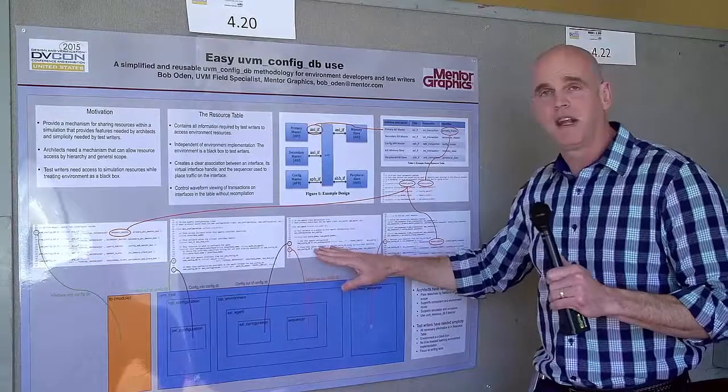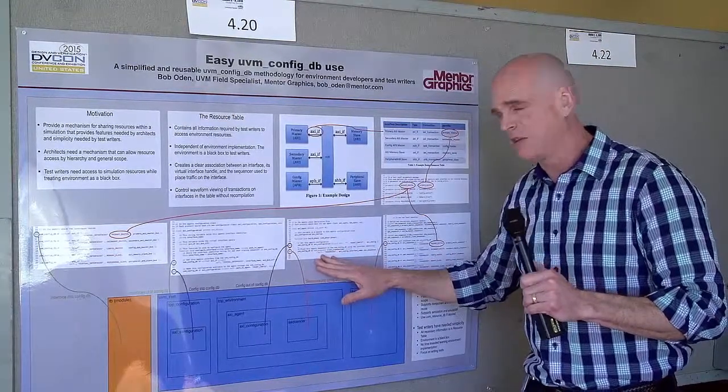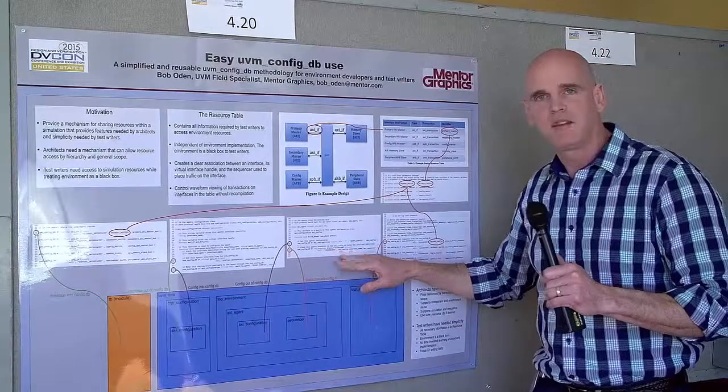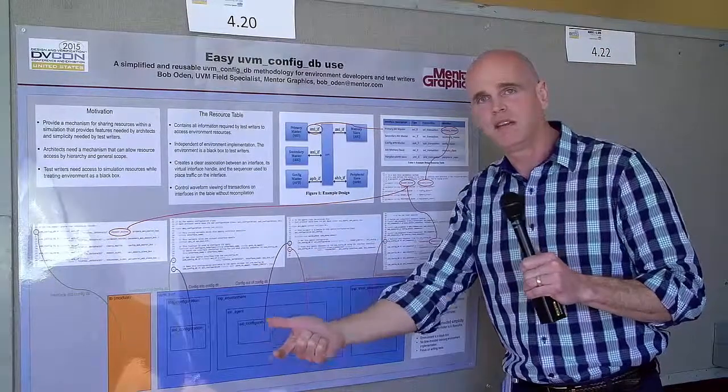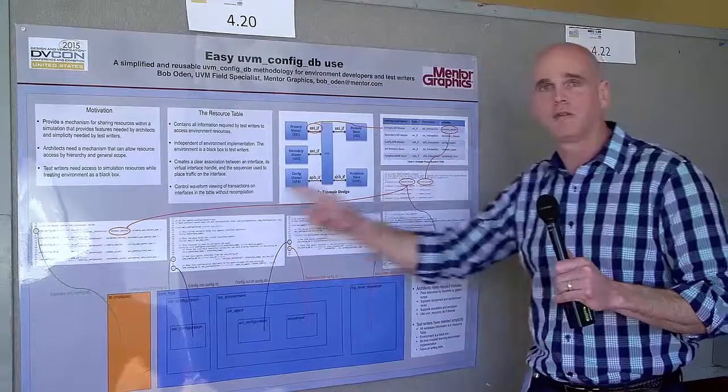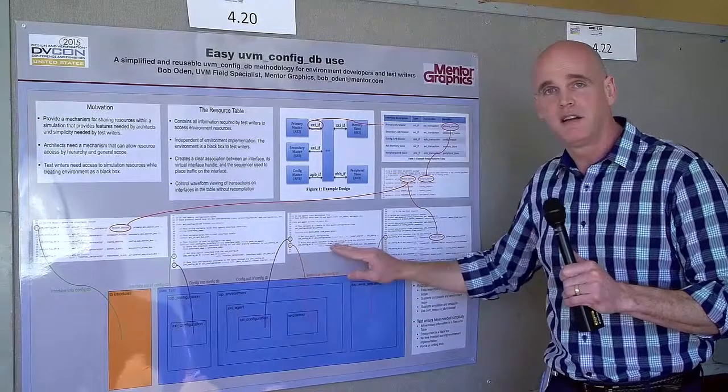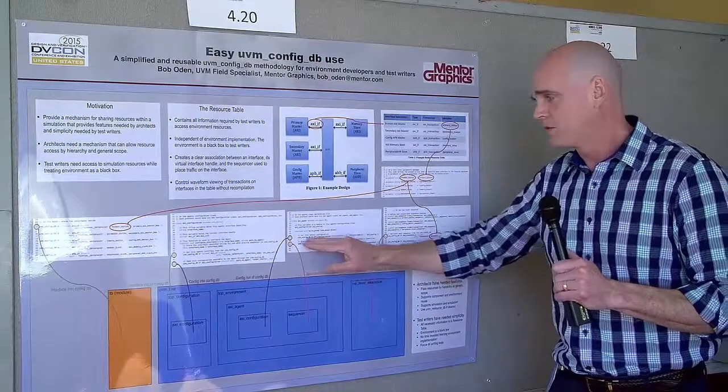he can take the sequencer that's inside of himself and place that sequencer into the config database using that same string that was used to identify the virtual interface handle. And the agent has access to that unique name through the configuration.